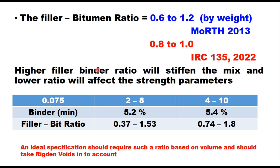A higher filler-binder ratio will stiffen the mix and a lower ratio will affect the strength parameters. Calculating the filler-bitumen ratio for the minimum binder content given in MORTH specification — 5.2% for grading 1 and 5.4% for grading 2 — and assuming 2 to 8% filler for BC1 and 4 to 10% for BC2, gives filler-bitumen ratios of 0.37 to 1.53 and 0.74 to 1.85 respectively.